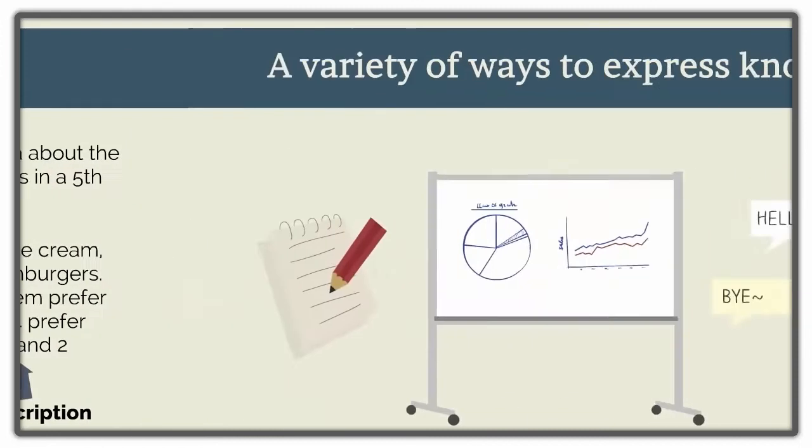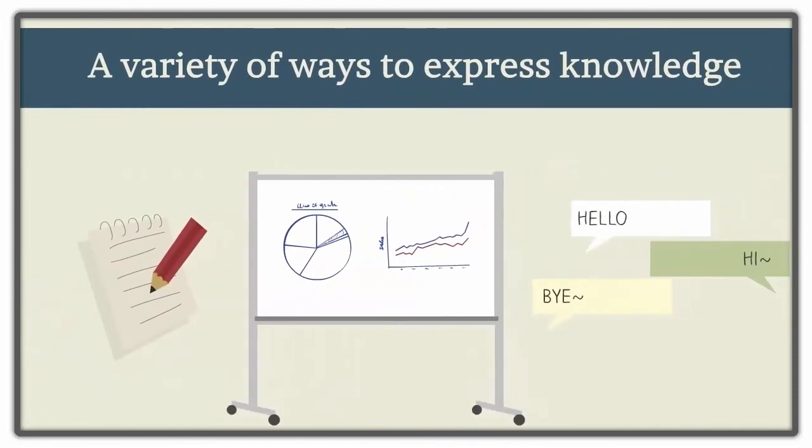When students are required to answer questions based on a graph, it can be a little tricky to describe the data without giving away the answers to the questions. If you cannot describe the image in a way that does not give away answers, then the educational framework, Universal Design for Learning, recommends adjusting an activity slightly to give students more options on how they can demonstrate their knowledge.